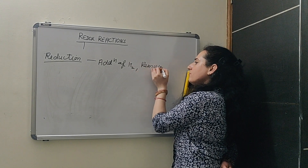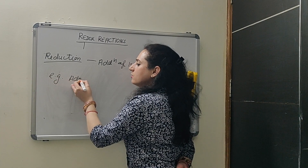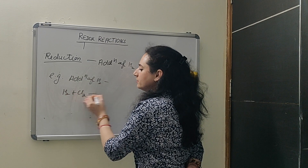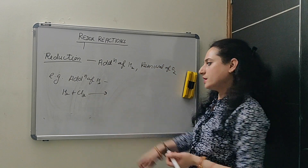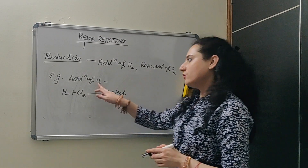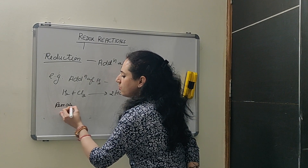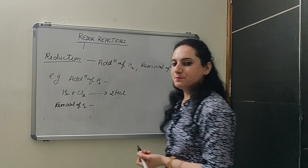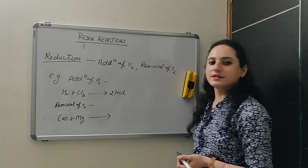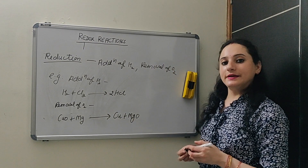For example, addition of hydrogen: hydrogen plus chlorine — when chlorine is added, it forms hydrochloric acid. So addition of hydrogen means reduction. Second one: removal of oxygen. That is also called reduction.